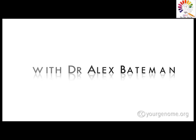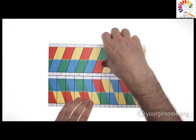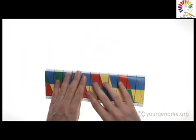Hello, my name's Alex Bateman. Take your origami DNA template and turn it over so the white side is upwards. Then fold the paper in half.